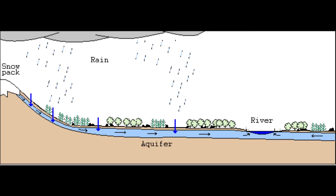Today we're going to be talking about discharge, which is simply the calculation of how much water is flowing through the river or stream at any given time.